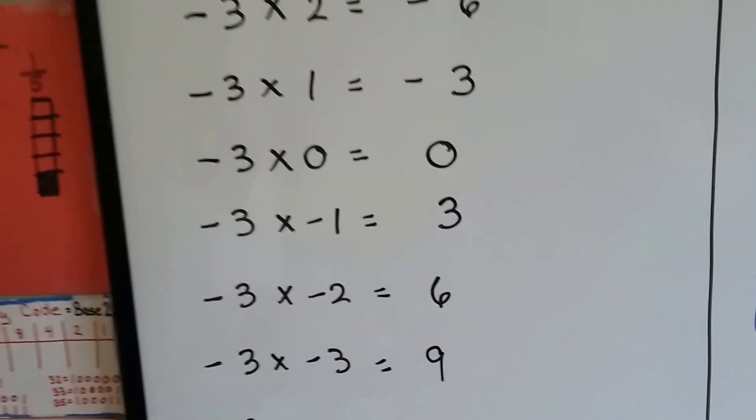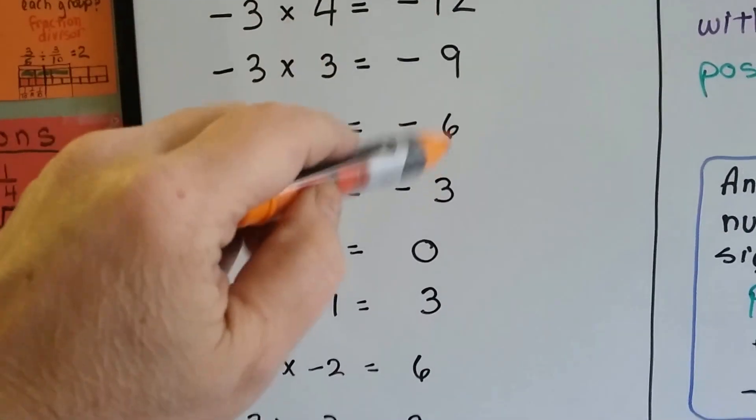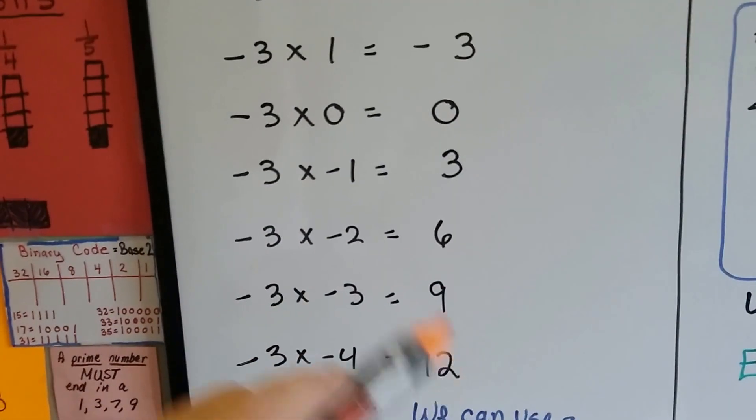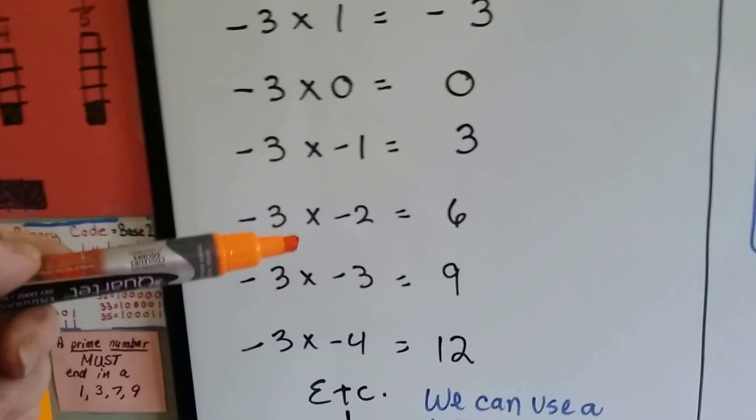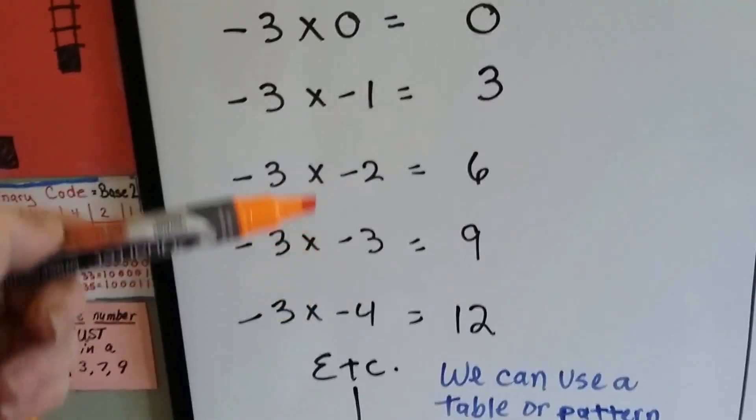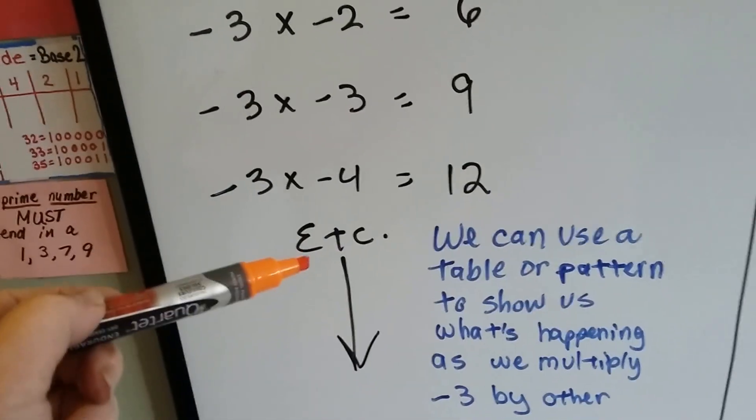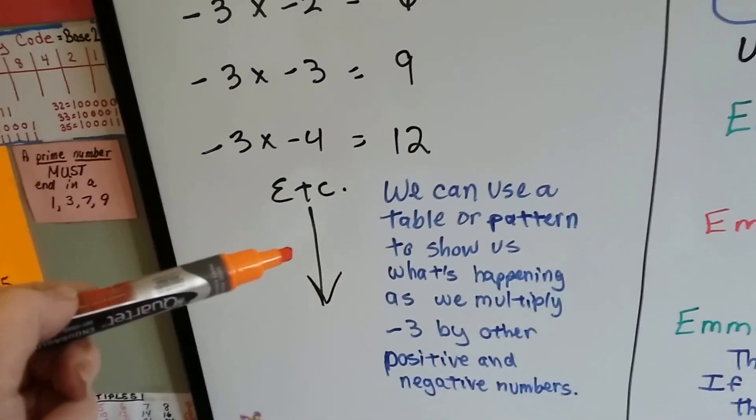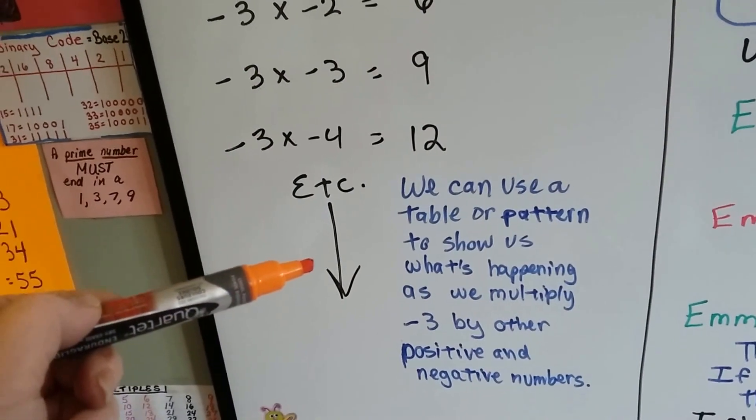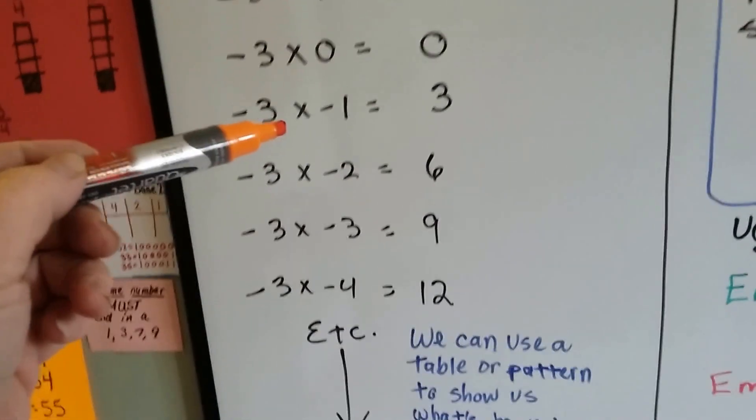So they're negative here, and they're becoming positive as we go down, see? Times 1 times 2 times 3. Times negative 1 times negative 2 times negative 3 times negative 4, see? And we can use a table or a pattern to show us what's happening as we multiply negative 3 by positive and negative numbers.